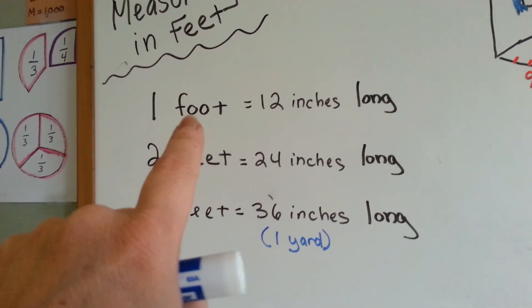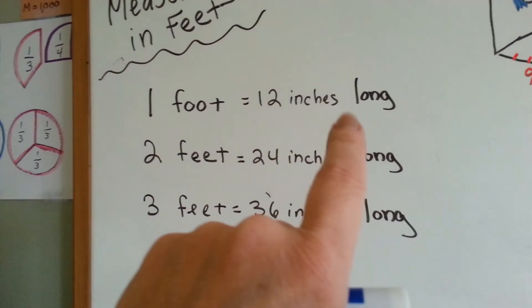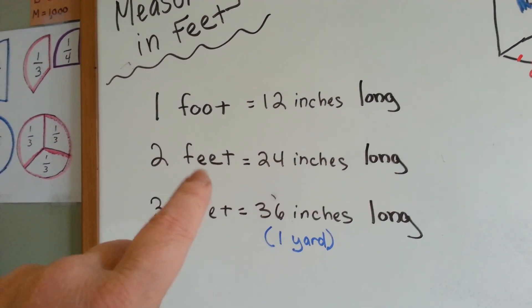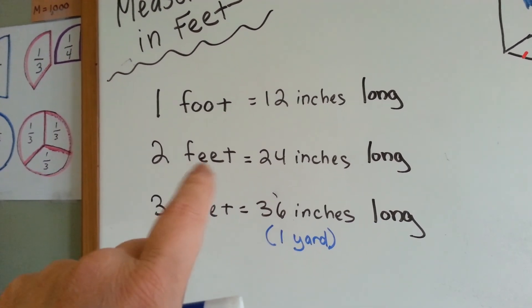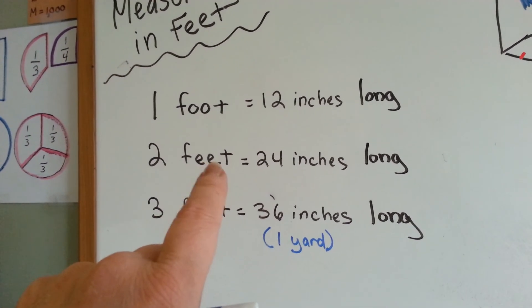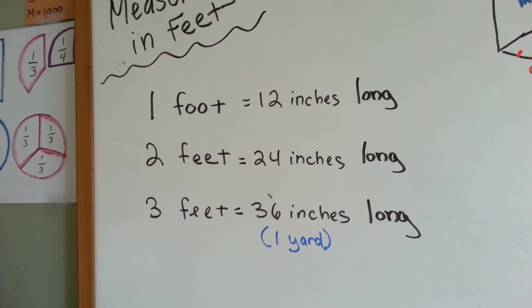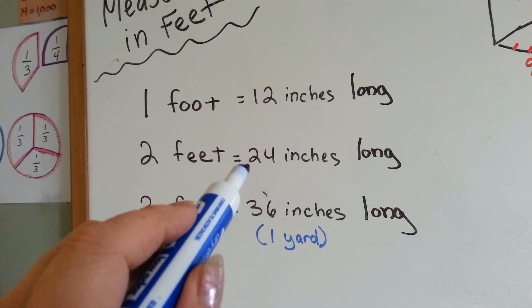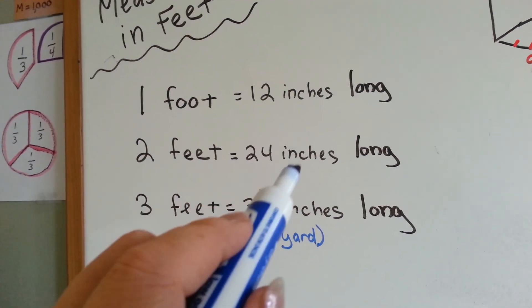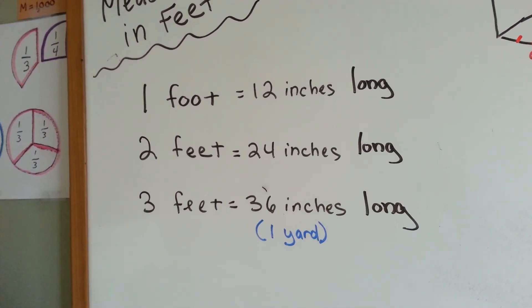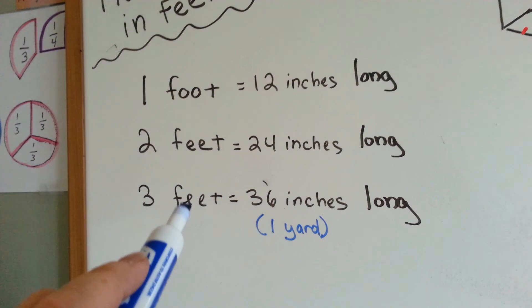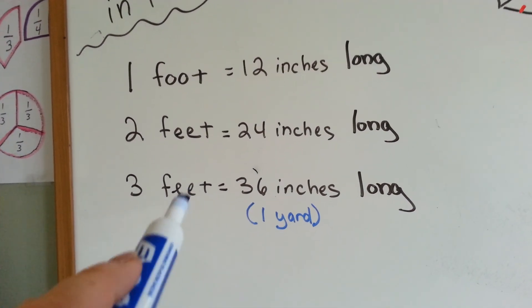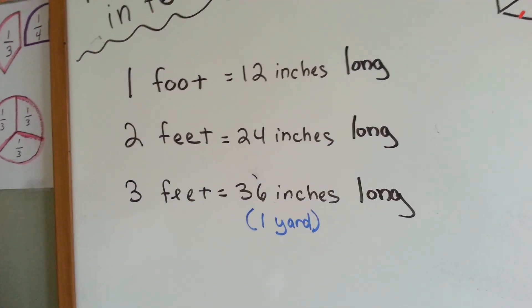One foot is 12 inches long, and when you have more than one, it changes to the word feet. So two feet equals 24 inches long, three feet equals 36 inches long, and three feet is one yard.